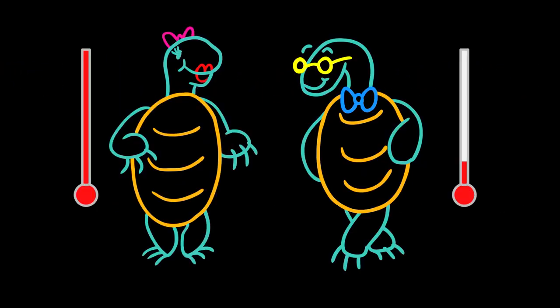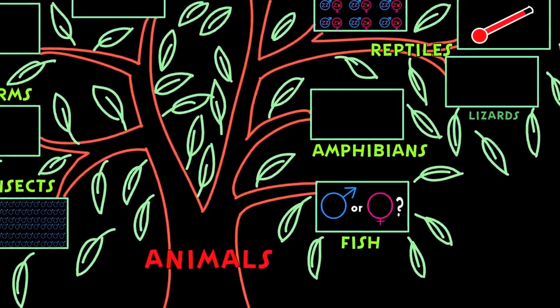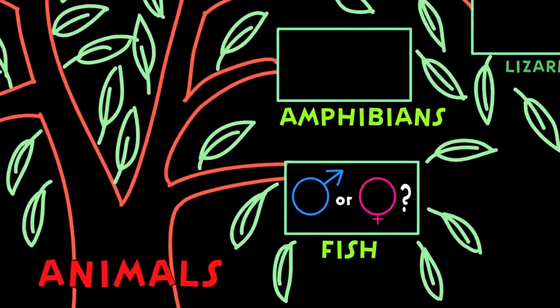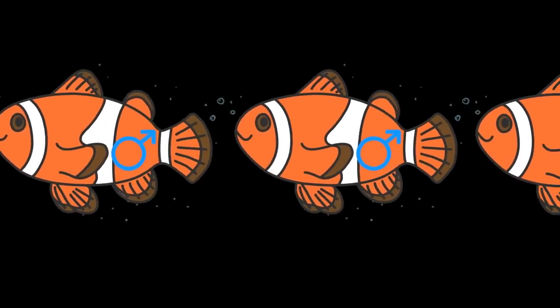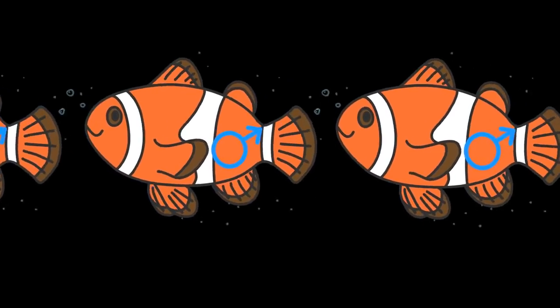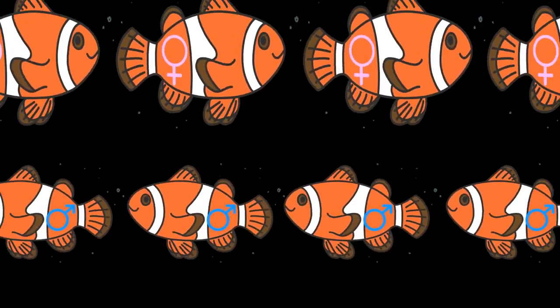For some tropical fish, the question of will it be a boy or will it be a girl isn't settled until even later in life. You see, clownfish all start out their lives as males. However, as they mature, they become female. They also spend their lives in small groups with a strict dominance hierarchy where only the most dominant male and female reproduce.